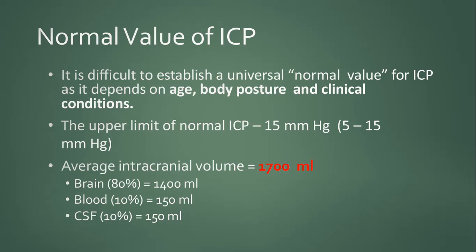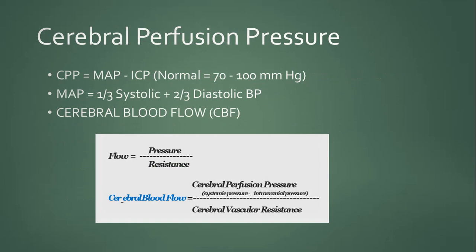Intracranial volume is made up of three components: brain, blood, and CSF. The total intracranial volume is 1700 ml. Blood and CSF each contribute 10%, while the brain is the major component, contributing 80% — approximately 1400 ml of the intracranial cavity volume.